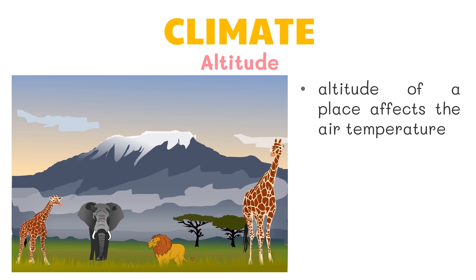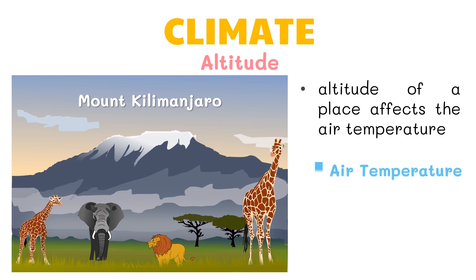The altitude of a place affects the air temperature. Let's take for example Mount Kilimanjaro. It is located in Africa and found near the equator, so we can conclude it is warm in these areas. Mount Kilimanjaro stands 5,895 meters above sea level. The peak of this mountain is covered by snow. How is this possible? This is because the air temperature decreases as the altitude increases.